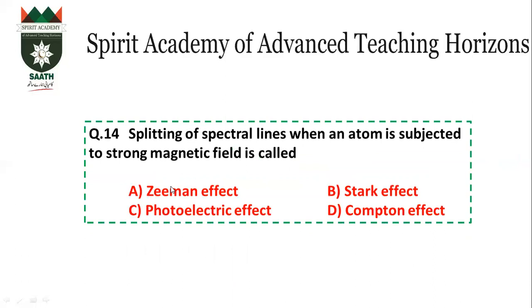Question number 14: Splitting of spectral lines when subjected to a magnetic field. When a magnetic field is applied, it is the Zeeman effect. If it were an electric field instead, it would be the Stark effect.